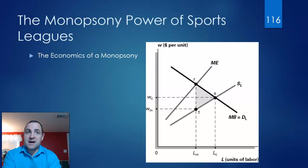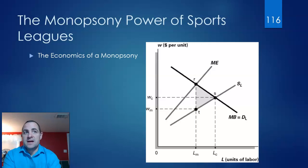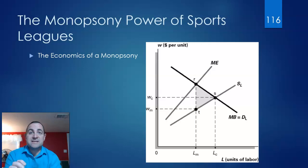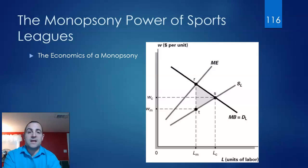Monopsonists maximize their profits by restricting the quantity of transactions relative to a perfectly competitive market. The lower output and consumption impose a deadweight loss on society. With monopsonies, they hire fewer workers than would be hired in a perfectly competitive labor market, which creates a deadweight loss for society.